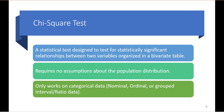A chi-square test is a statistical test designed to test for statistically significant relationships between two variables organized in a bivariate table. It requires no assumptions about the population distribution and only works on categorical data — nominal, ordinal, or some sort of grouped interval ratio data.